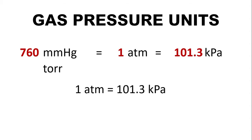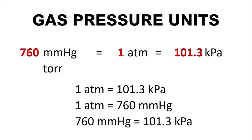Therefore, we can make this equation: 1 Atmosphere is equal to 101.3 Kilopascal. We also have 1 Atmosphere is equal to 760 mmHg. It means that 760 mmHg is equal to 101.3 Kilopascal.